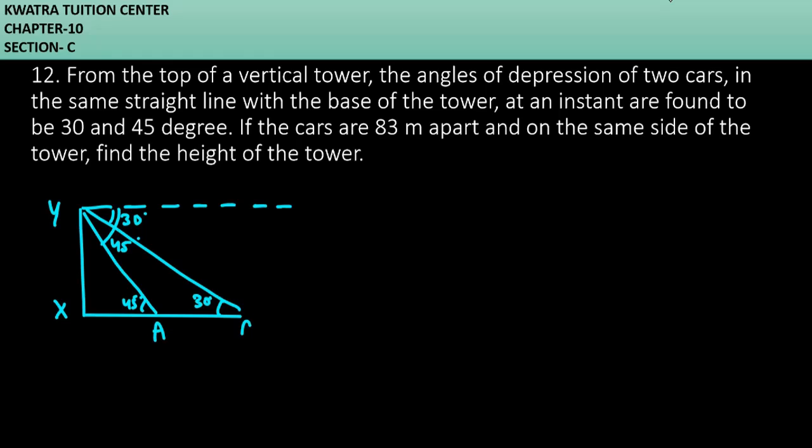Now, let's say this is point A and this is point B. And we said that the cars are how far they are? They are 83 meter apart. And on the same side of the tower, find the height of the tower. This means what we have to find? x, y.